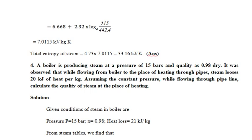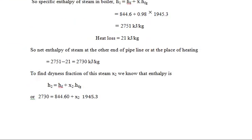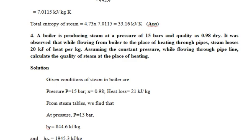The boiler is generating steam at 15 bar with dryness fraction 0.98. When the steam flows through the pipes to the heating location, 20 kJ per kilogram of heat is rejected by the steam. Assuming constant pressure, you must determine the quality (dryness fraction) of the steam at the place of heating. From the steam table at 15 bar, find hf and hfg. Calculate initial enthalpy H1 = hf + x·hfg. Substituting values, H1 = 2730 kJ/kg. Then the net enthalpy at the other end of the pipe (at the place of heating) = H1 − 20 = 2710 kJ/kg. From this, find the new dryness fraction.